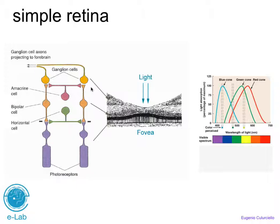You can see some simple circuitry here: horizontal cells provide some kind of spatial averaging. Bipolar cells convey this averaging information down to amacrine cells, which also perform some averaging — both temporal and spatial. And the ganglion cell converts this information into a sequence of pulses.